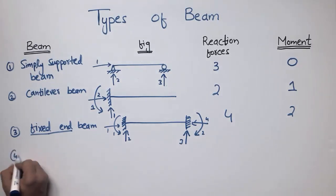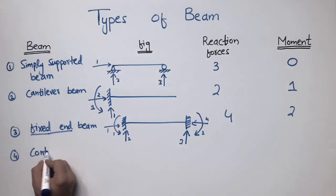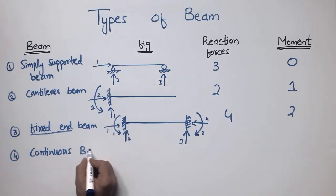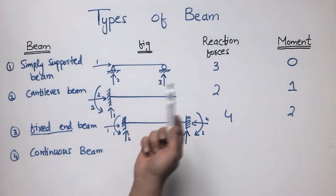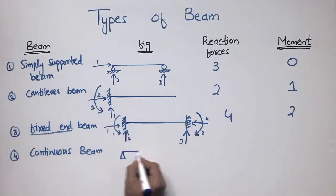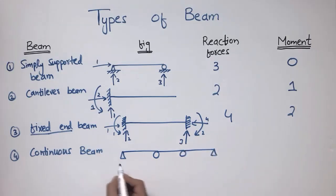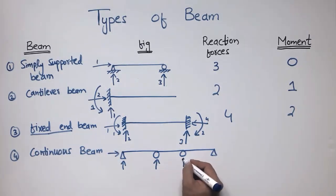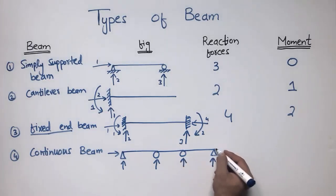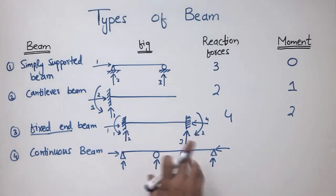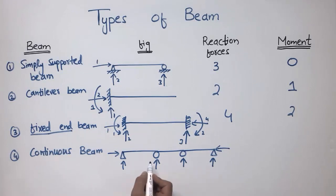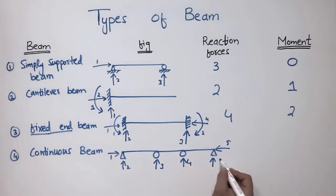The fourth type is the continuous beam, which has more than two supports. You can see a hinge support resisting vertical and horizontal, and roller supports resisting only vertical, and another hinge support resisting vertical and horizontal. There is no fixed support in the continuous beam. The total number of support reaction forces are six, and it cannot resist moment — so moment capacity is zero.